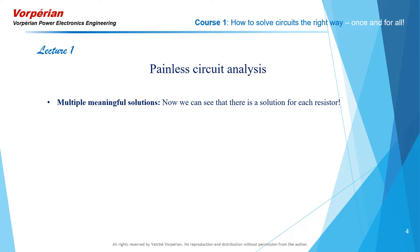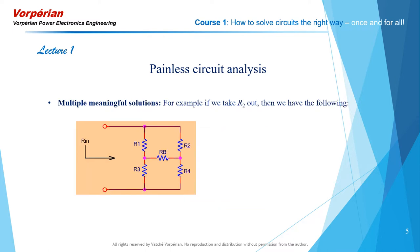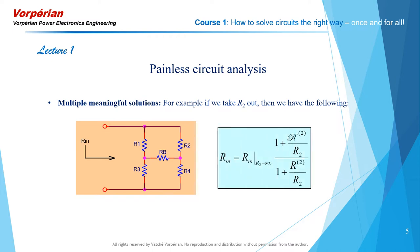Continuing with multiple meaningful solutions, I'm going to work out once again the input resistance of the bridge circuit, this time with R2 taken out as an open circuit. In my previous two videos, I took each of R1 and Rb out and reinstated them using the extra element theorem. Just for reinforcement, in this example, I'm going to take R2 out and show you the steps of applying the extra element theorem. Now, if we take out R2 as an open circuit, this will be the form of the EET.